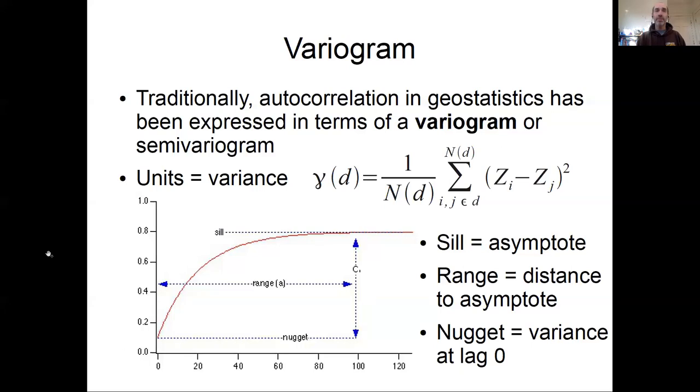You would expect the sill to asymptote to the background variance of the data—the overall variance in the data. What we're seeing is at shorter distances, points are less variable than you would expect by chance. There's less variance than the background variance at lower distances.